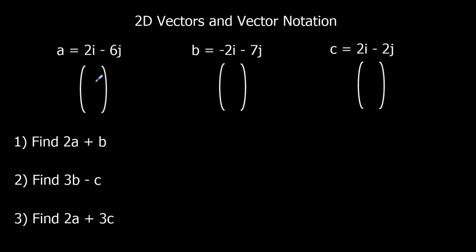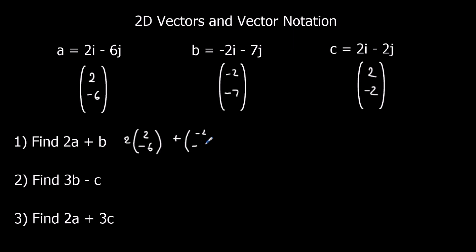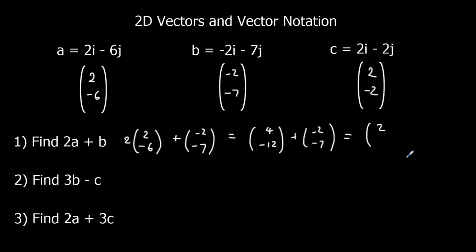So this time A is (2, -6), B is (-2, -7), and C is (2, -2). For 2A plus B: 2 lots of (2,-6) plus (-2,-7). That's (4,-12) plus (-2,-7). For the i's: 4 take away 2 is 2. For the j's: -12 minus 7 is -19. So the answer is 2i minus 19j.